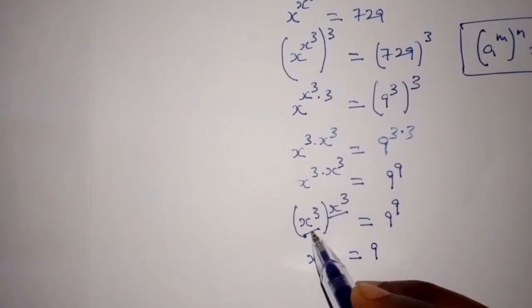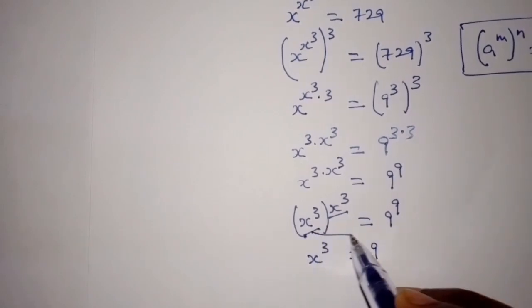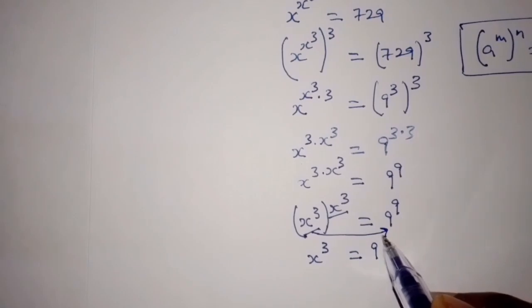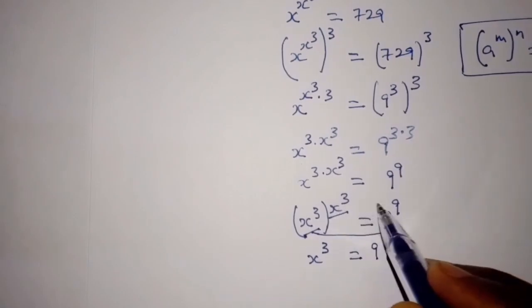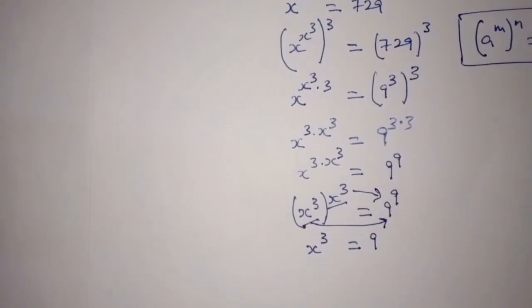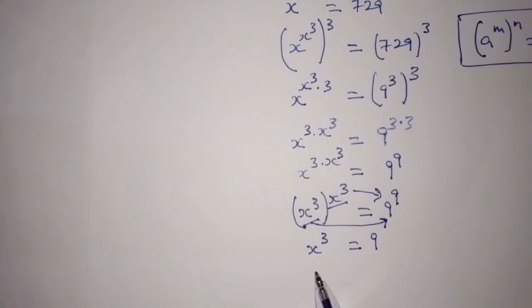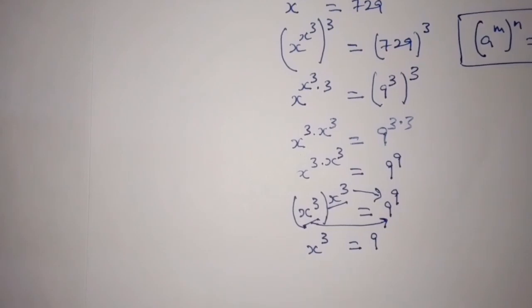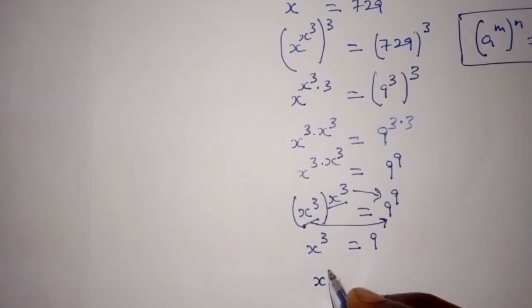So x power 3 is equal to 9. Therefore, we take the cube root of both sides to find x.